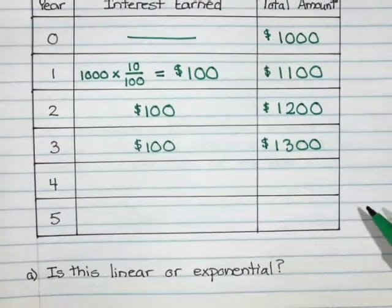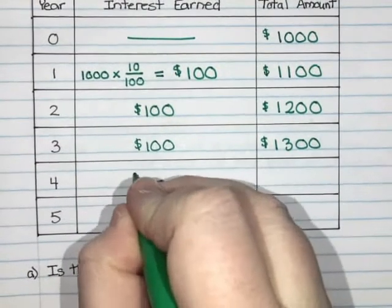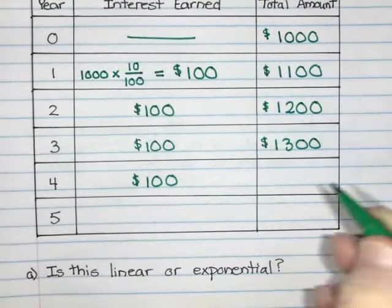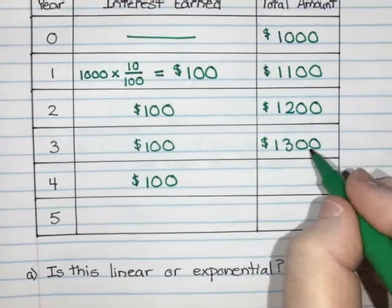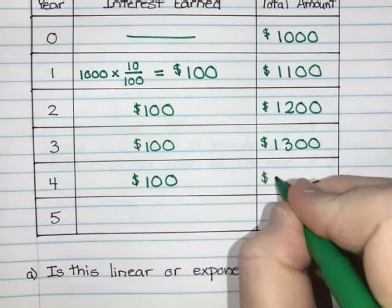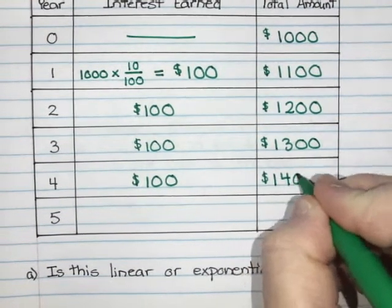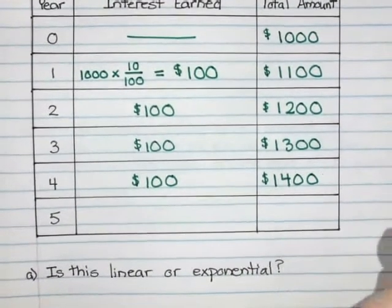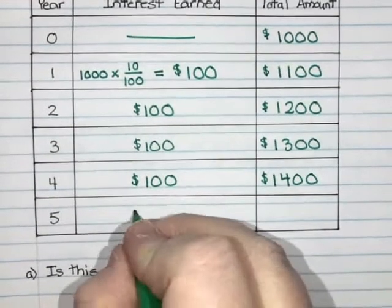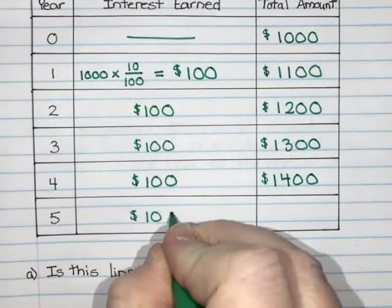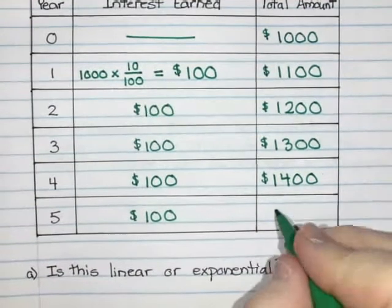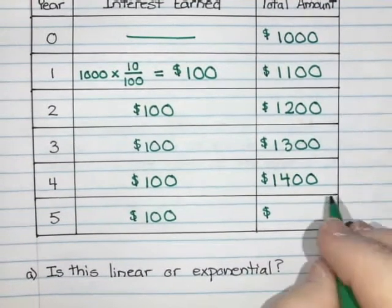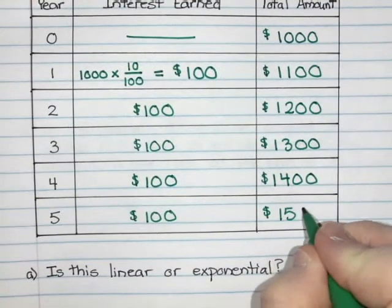In year four, same idea, he gets another $100 from his original investment. We're going to add that on to get $1,400 in total. And then in his last year that he has invested the money for, he gets last installment of $100. For that last year, we add that on, 1,400 plus 100 is $1,500.